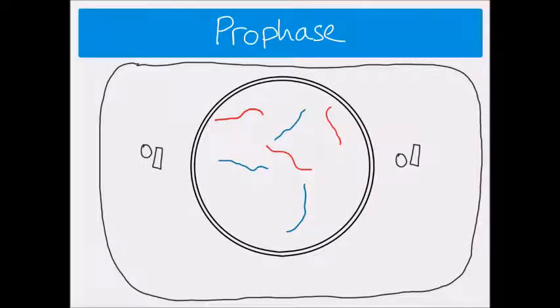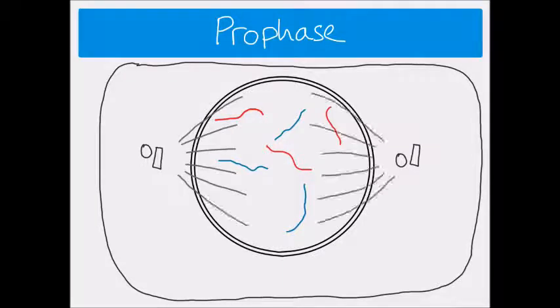From the centrioles, so our pair of centrioles, one at each pole, microtubules start to develop. And these microtubules are known as spindle fibres. So the whole thing, all of these microtubules together coming from both poles, they represent the spindle, and the spindle is made of spindle fibres.